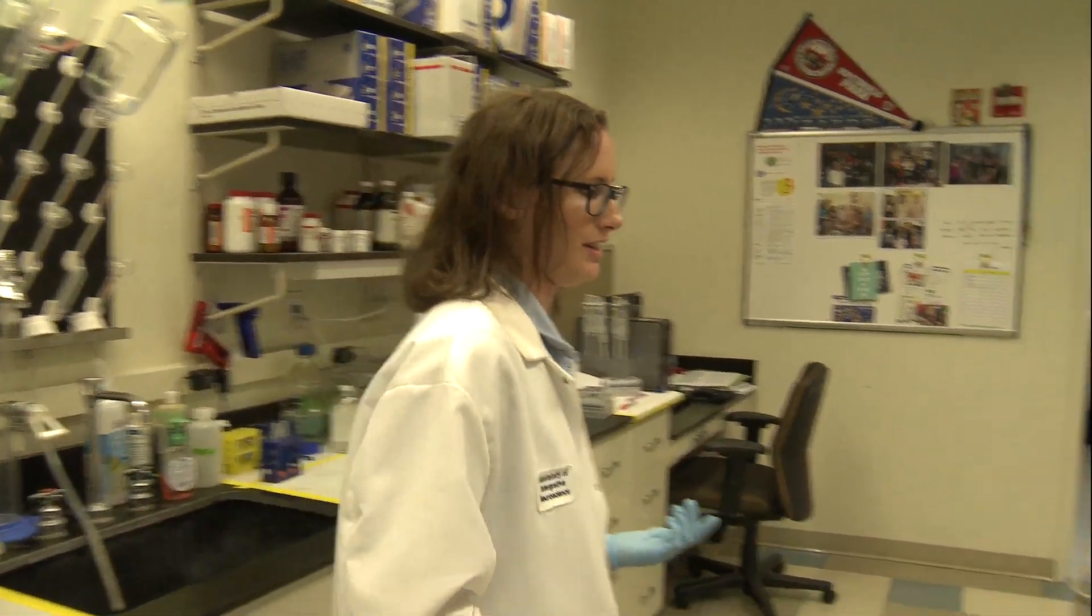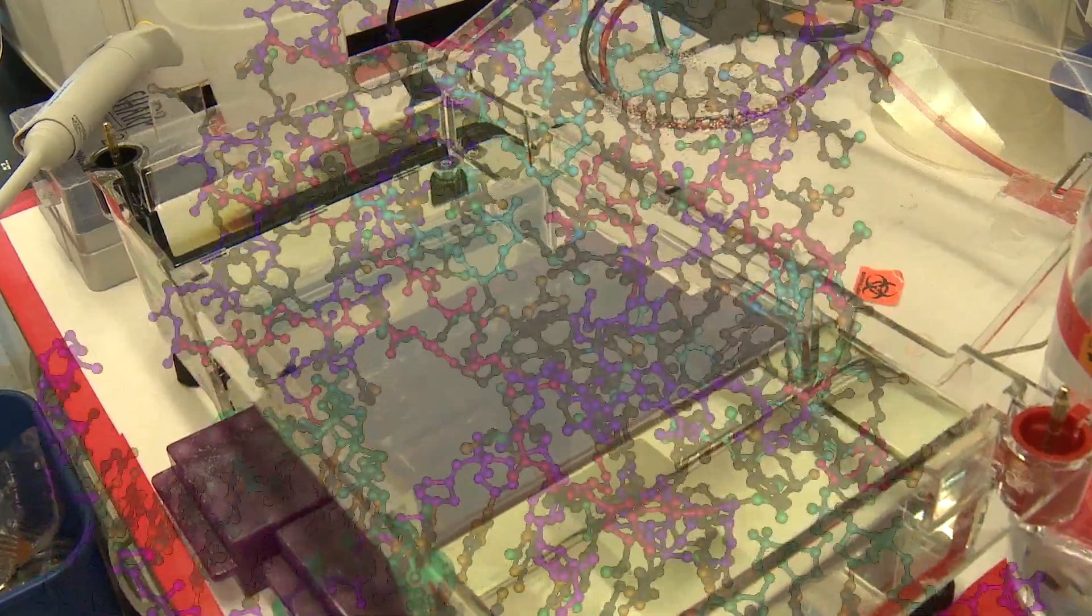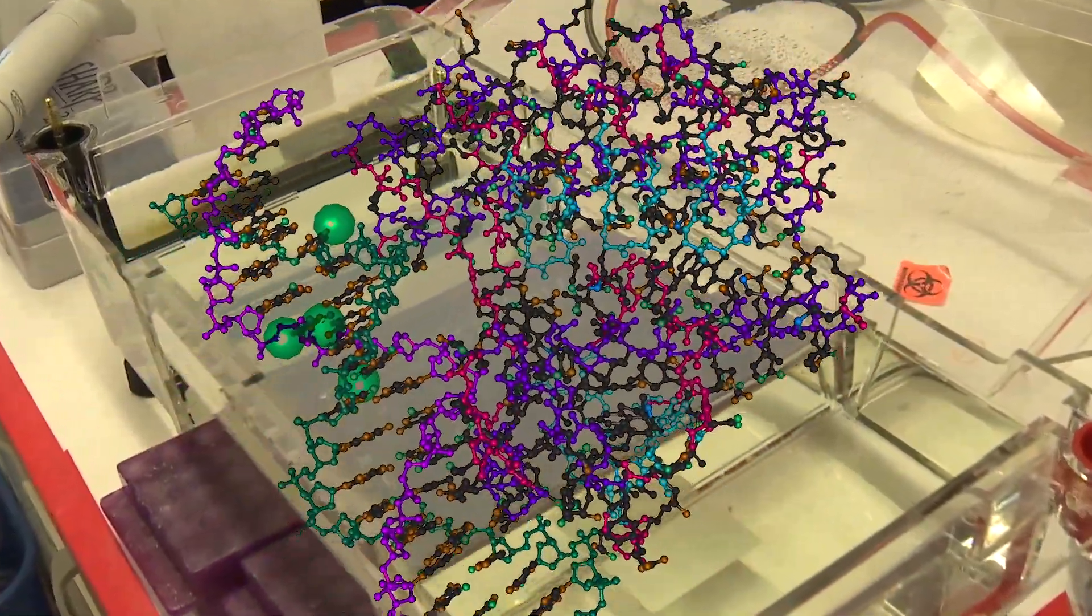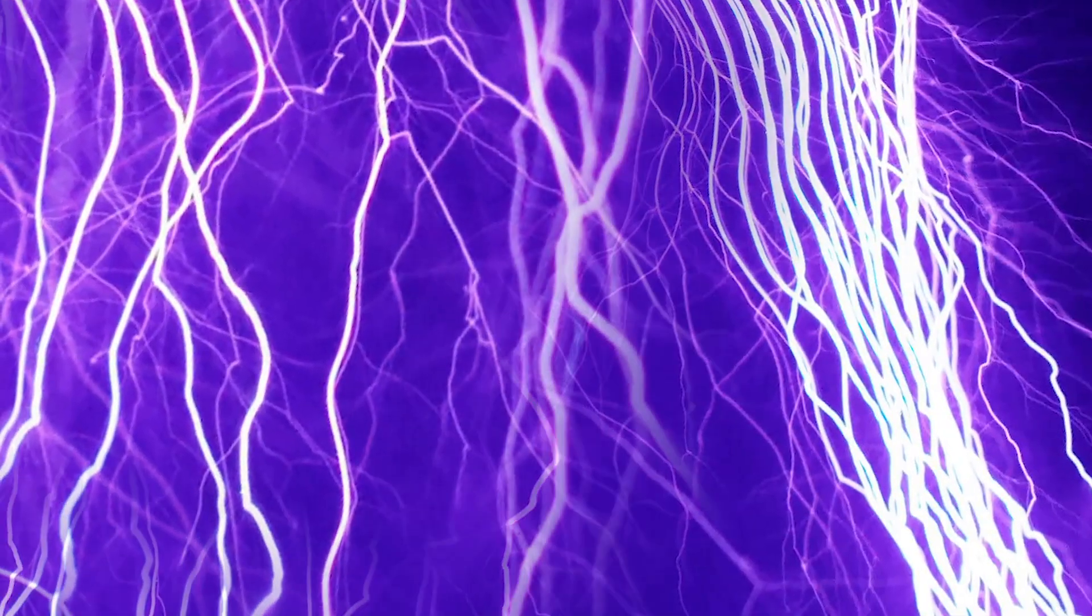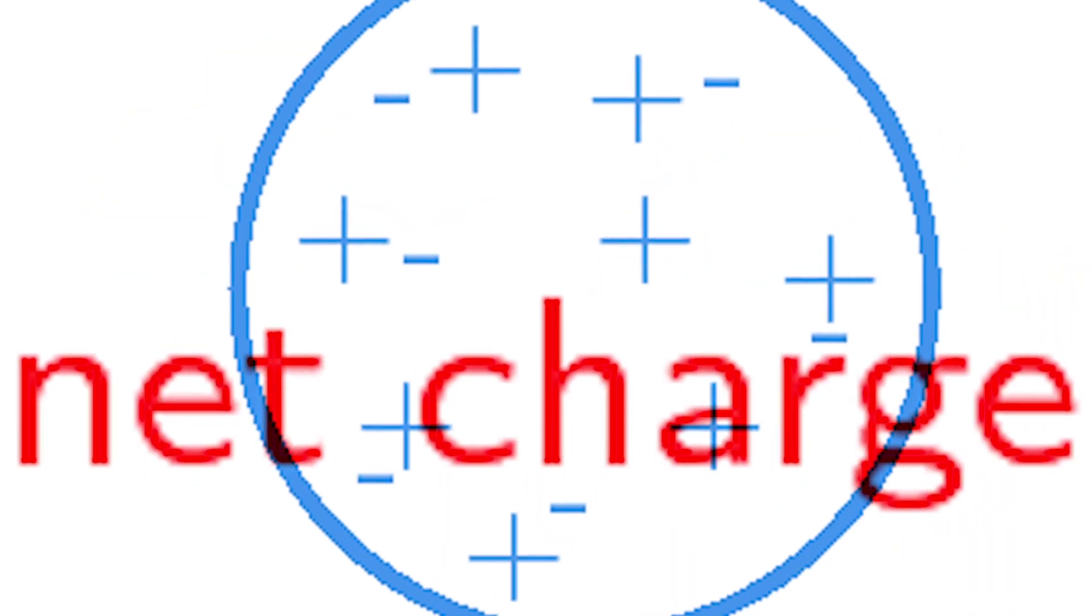After that reaction is completed, then we use it in the gel because DNA is actually negatively charged. And so if you run electricity, the DNA will naturally go towards the positive charge.